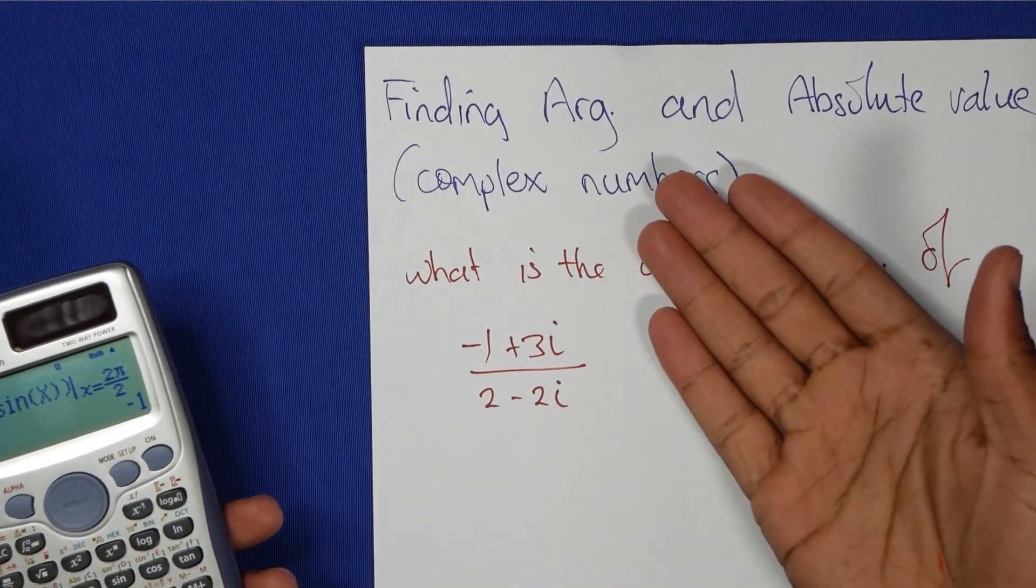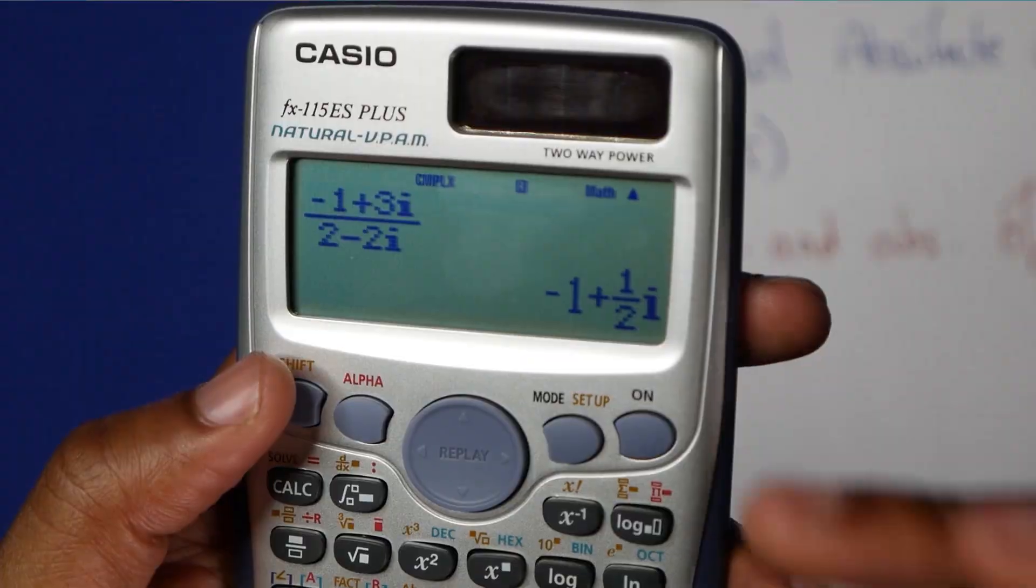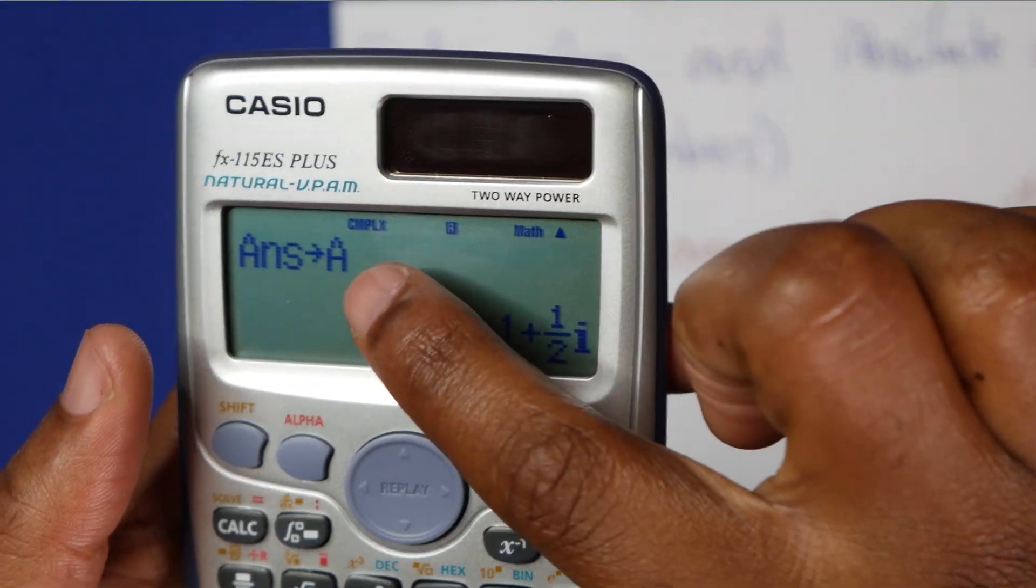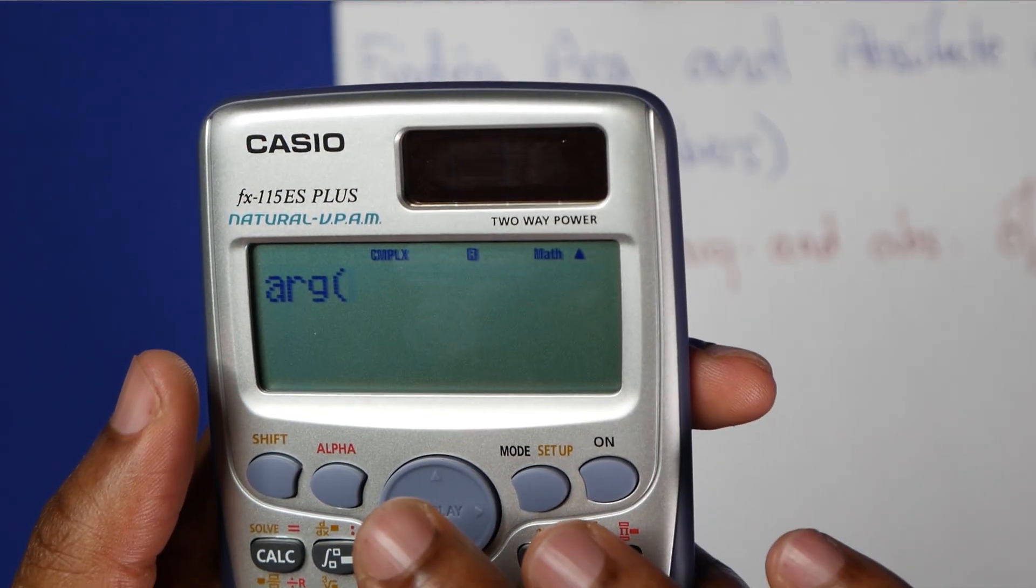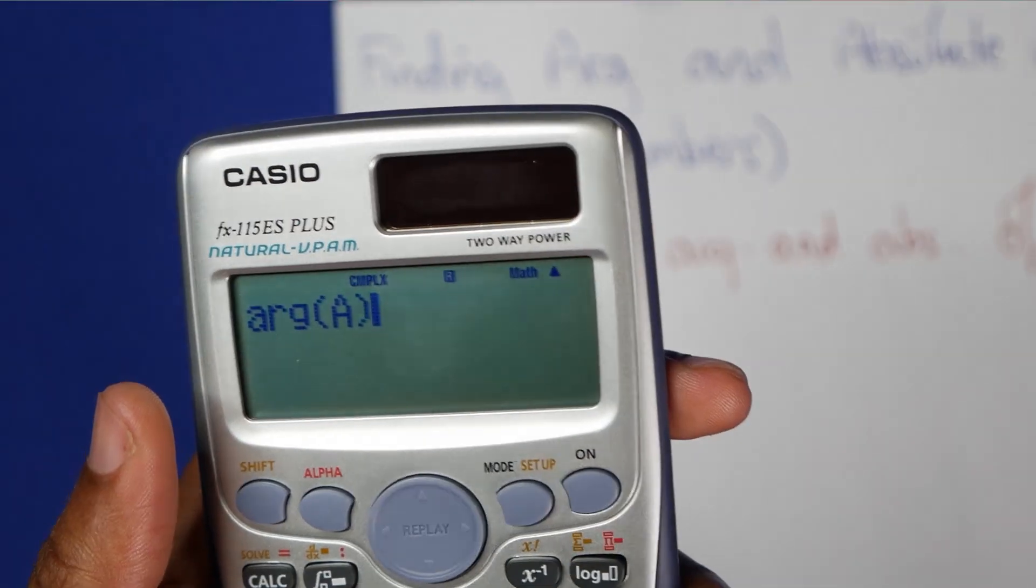How about some complex numbers? We call this find the argument and absolute value. I can actually store this as a variable, set it to a. Argument of a is... absolute value of a, there you go.